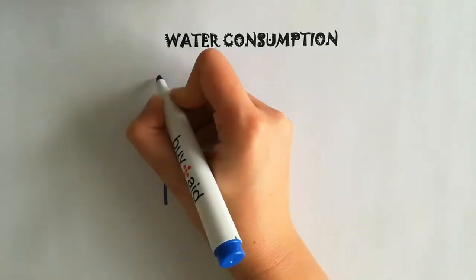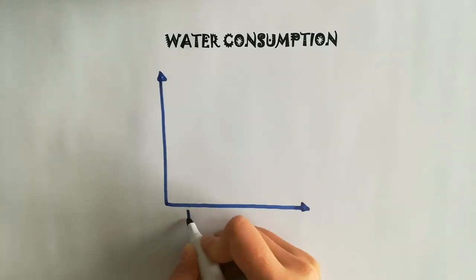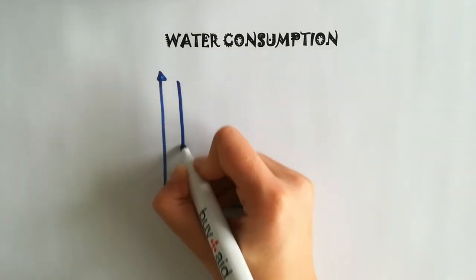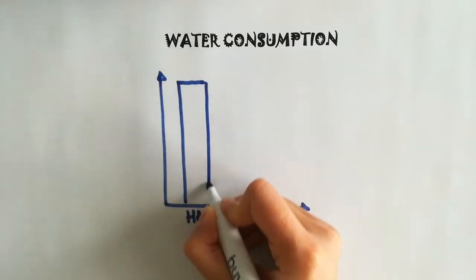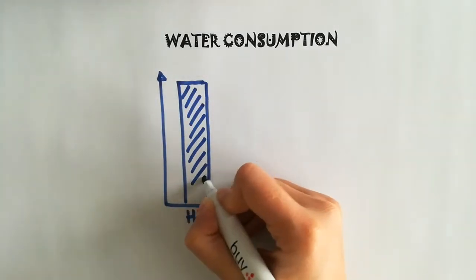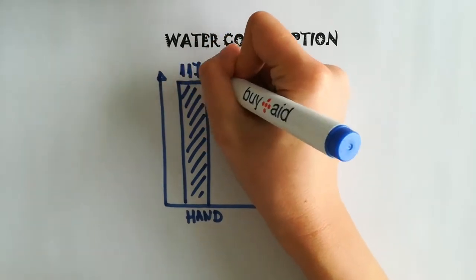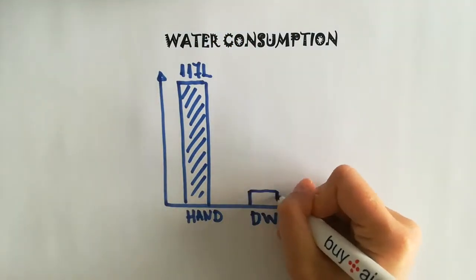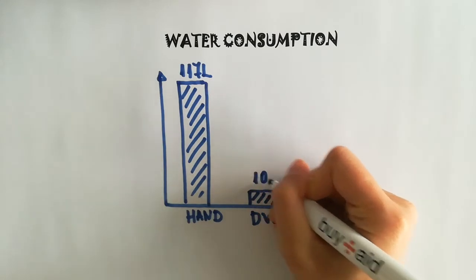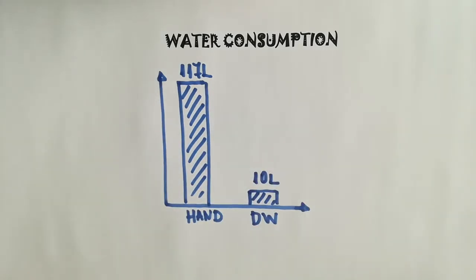Imagine you run a household without a dishwasher. You have to do the dishes by hand. On average, you will use 117 liters of water to clean the dishes for 13 place settings. With a dishwasher, on average, you would use only 10 liters of water for the same amount of dishes. That's more than 10 times less water.